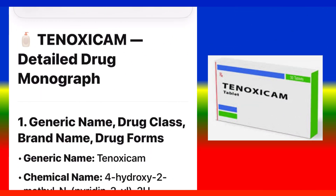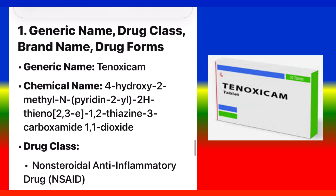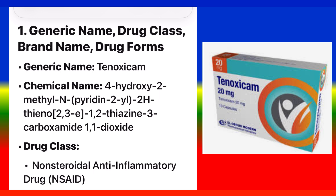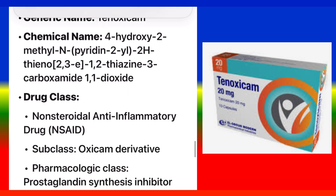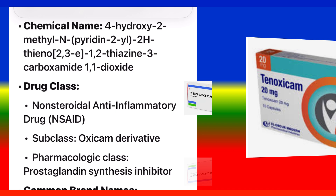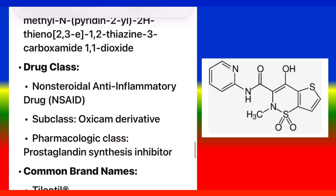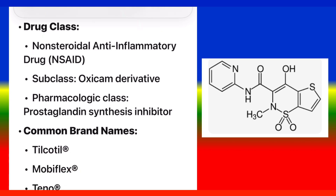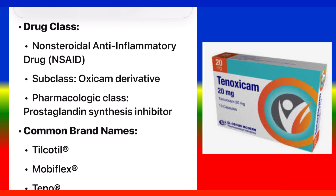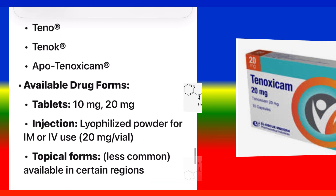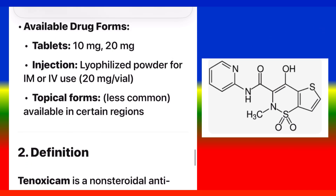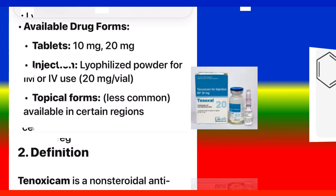Tenoxicam Detailed Drug Monograph. Generic Name: Tenoxicam. Chemical Name: 4-Hydroxy-2-Methyl-N-Pyridine-2-YL 2-H-Theano-2,3-E-2-Thiazine-3-Carboxamide 1,1-Dioxide. Drug Class: Non-steroidal Anti-Inflammatory Drug (NSAID). Subclass: Oxycam Derivative. Pharmacologic Class: Prostaglandin Synthesis Inhibitor. Common Brand Names: Tilkatil, MobiFlex, Tenno, Tenoc, Apotenoxicam. Available Drug Forms: Tablets 10mg, 20mg; Injection lyophilized powder for IM or IV use 20mg vial; Topical forms available in certain regions.